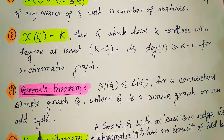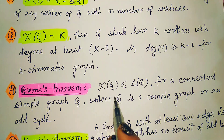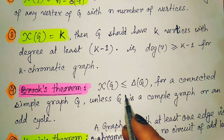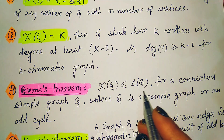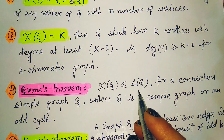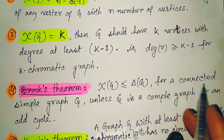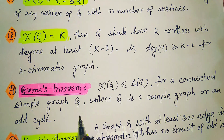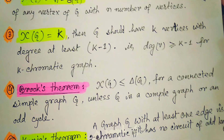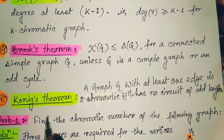One more theorem is Brooks' theorem. It states that the chromatic number of G is less than or equal to Δ(G), the maximum degree of any vertex in the given graph, for a connected simple graph G, unless G is a complete graph or an odd cycle.